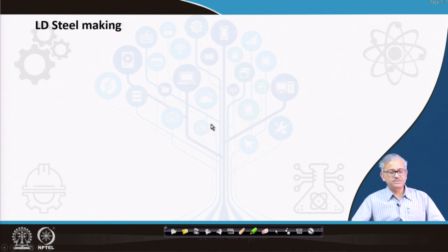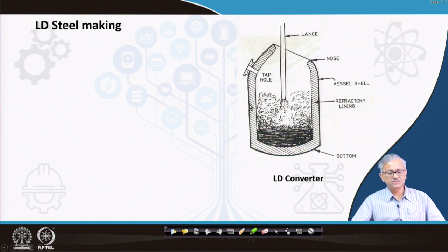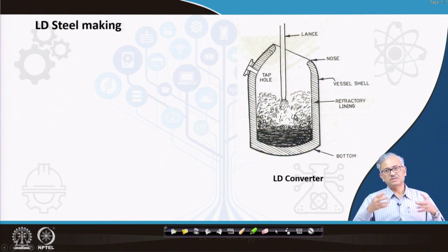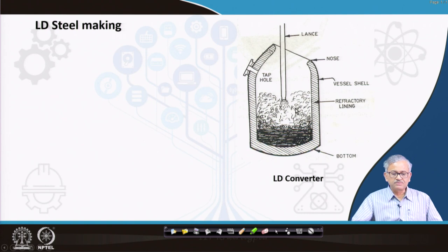First, LD steel making basics. This is the LD furnace, which we have also discussed during the history of steel making. It looks almost similar to the Bessemer steel making furnace. In Bessemer, you inject air from the bottom — not oxygen, just air. Here you can see the structure, and then the oxygen lance is there from the top. You charge the oxygen over the bath and what you find is a slag, gas, metal emulsion production where the slag-metal surface area increases tremendously, and that is why the kinetics of LD is very fast.